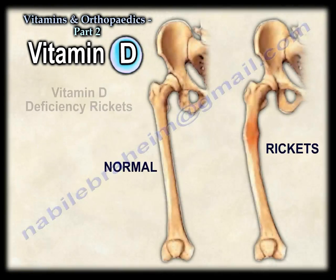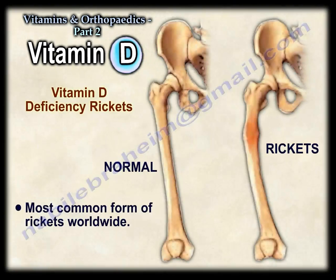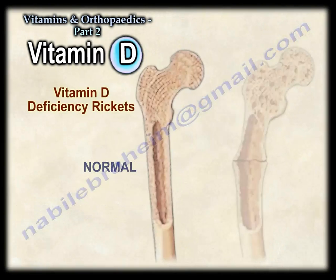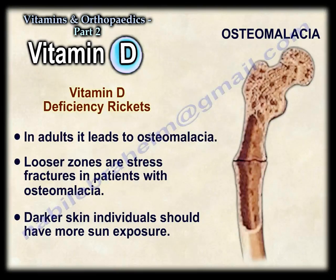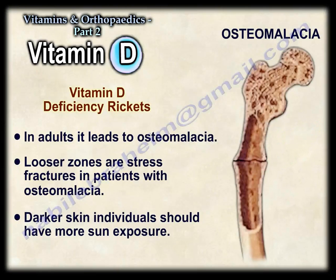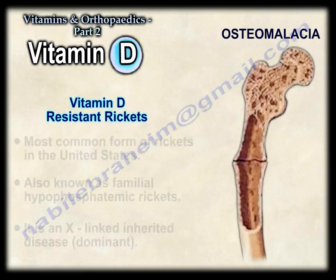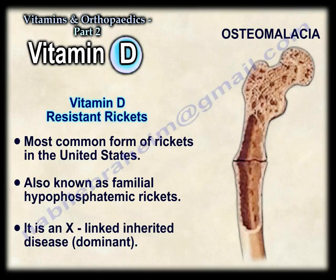Vitamin D deficiency rickets is the most common form worldwide. In adults, it leads to osteomalacia. Looser zones are stress fractures in patients with osteomalacia. Darker skin individuals should have more sun exposure.